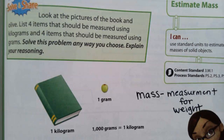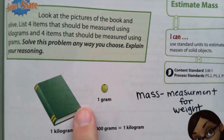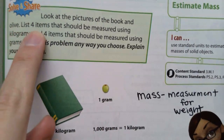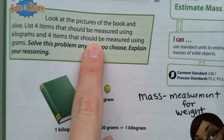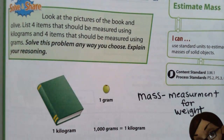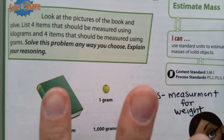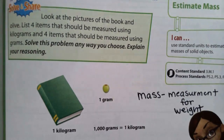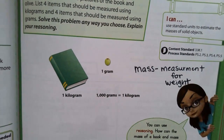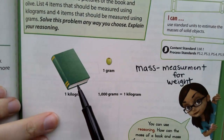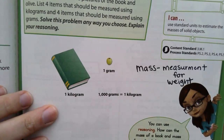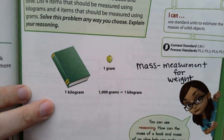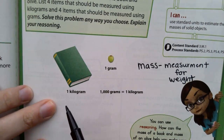It says look at the pictures of the book and an olive. List four items that should be measured using kilograms and four items that should be measured using grams. I'll do three with you and you'll do one anyway. So a kilogram would be the weight of a book — you can even use your book that you're holding. Think about some things that might weigh in kilograms.